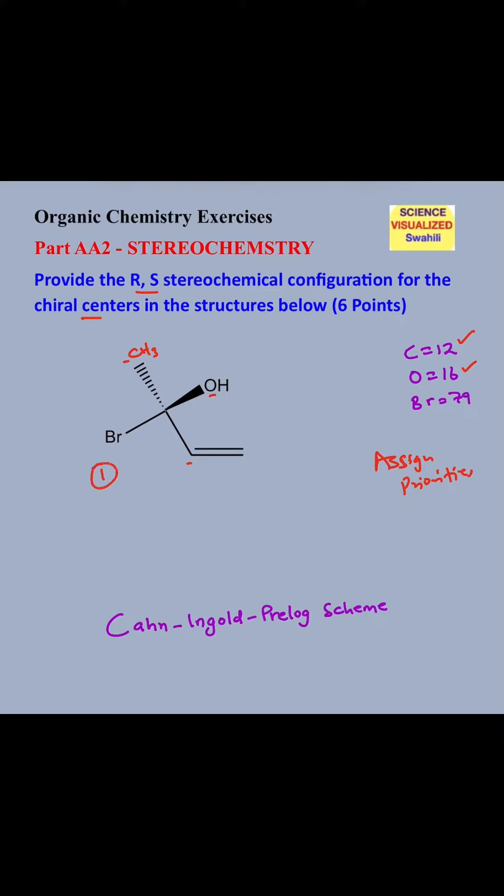Next is oxygen, which has a mass of 16. That will be priority number 2. And then next we are comparing that carbon and this carbon. We see that they all have a mass of 12, equal priority. But this carbon is connected to hydrogen, while that other carbon is connected to another carbon, making this side to have a higher priority, and therefore we are going to assign that a priority of 3. And then lastly, CH3 will have a priority of 4.